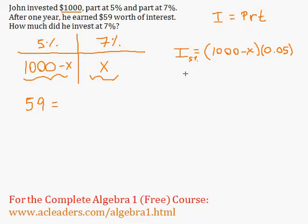What about the interest at 7%? Well, he invested X dollars, so that's the P in this case, invested at 7%. And R will be 0.07, since he invested at 7%. And T again is just 1, so I don't need to write it over there.